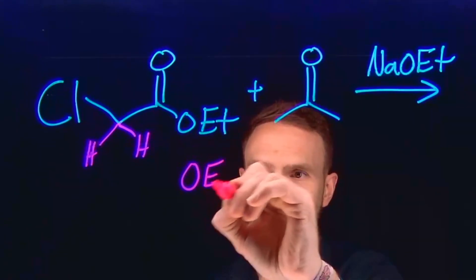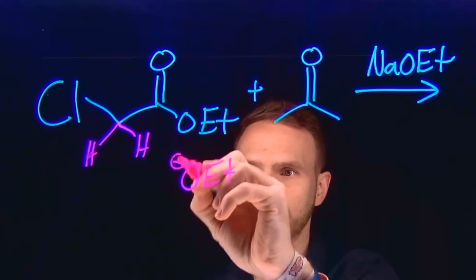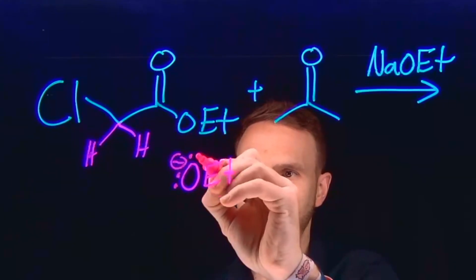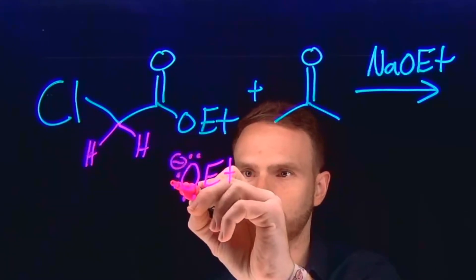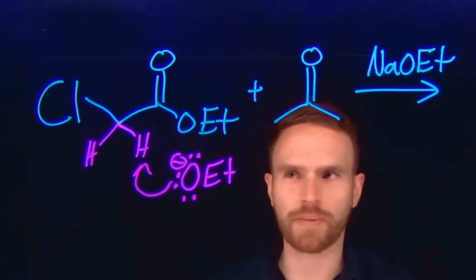So ethoxide, or sodium ethoxide, is a base that we can use to deprotonate that alpha-carbon hydrogen position, which is going to be more acidic than most carbon-hydrogen bonds.